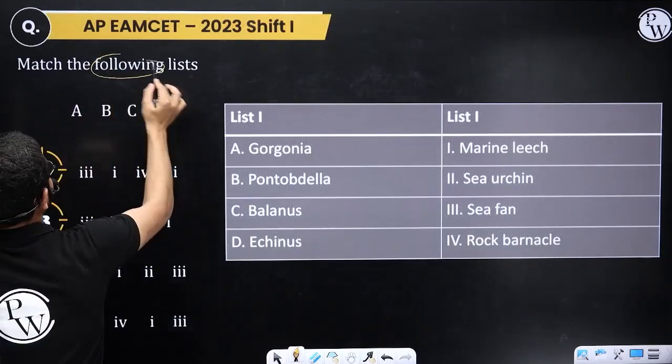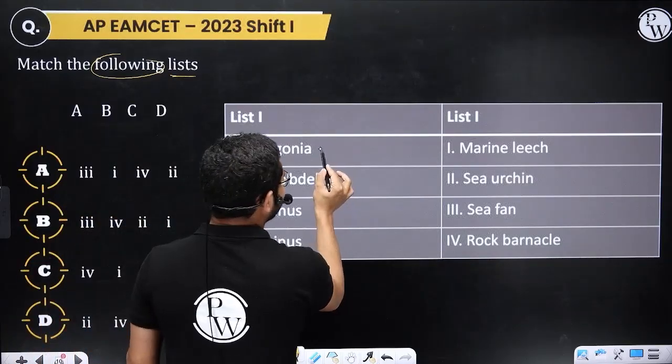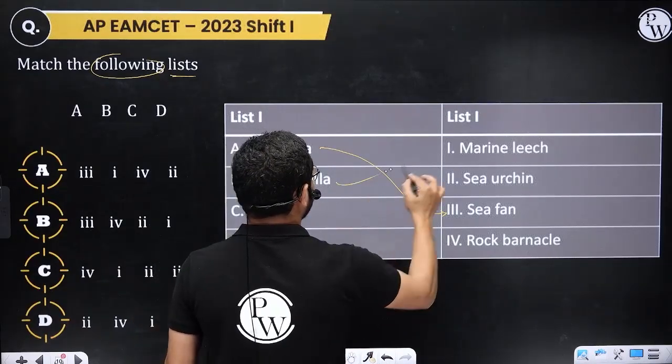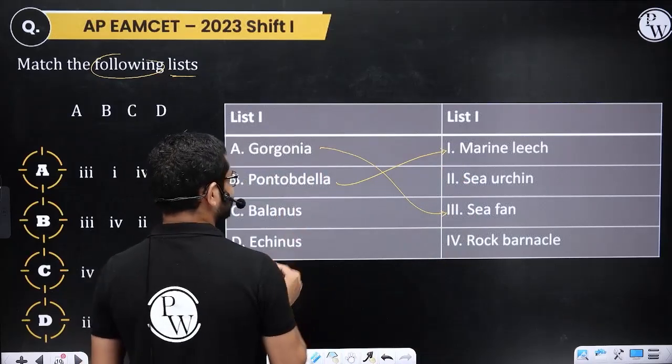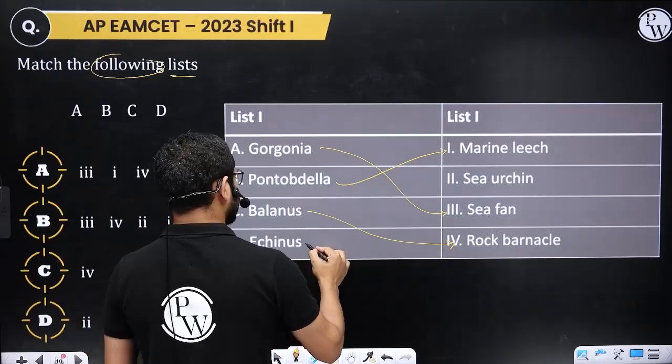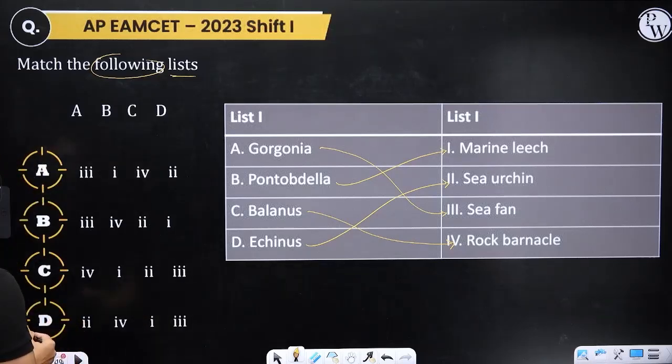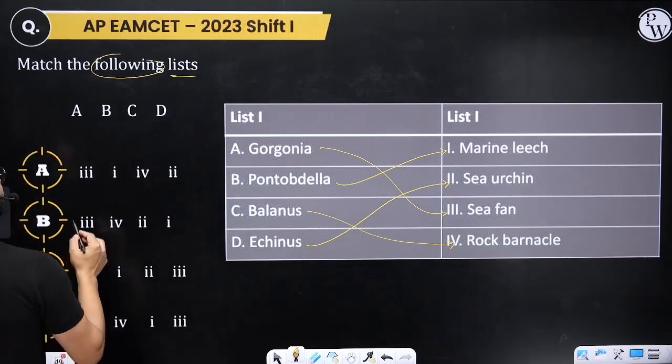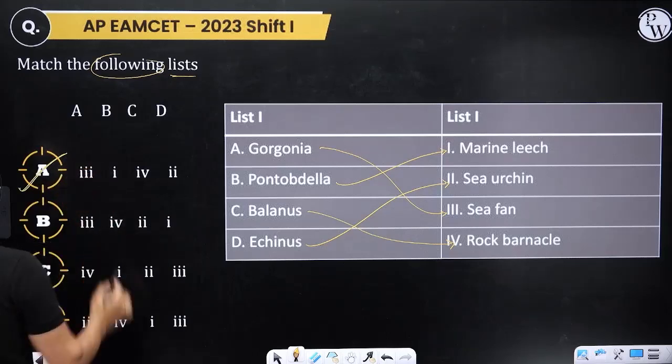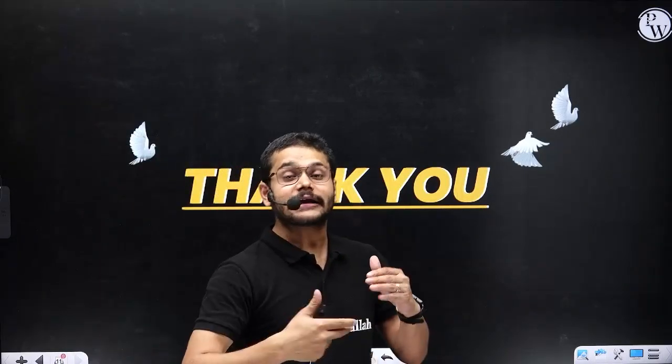Next question: Which of the following is the match? Gorgonia is called sea fan, Pontobdella is marine leech, Balanus is rock barnacle, and Kianeas is sea urchin. So options three, one, and four match. Answer is option D.